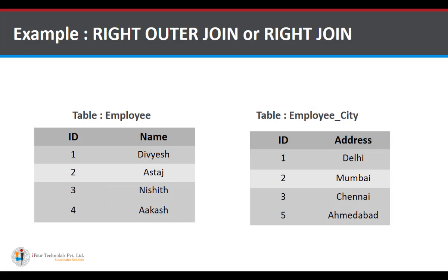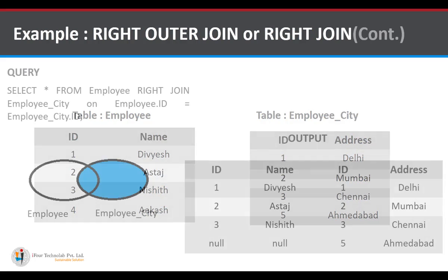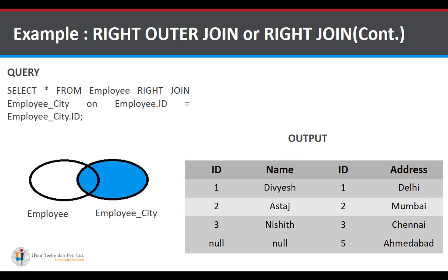The query for right outer join is: SELECT * FROM employee RIGHT JOIN employee_city ON employee.id = employee_city.id. This will show all the data from employee_city and the matched data from both the employee and employee_city tables, as shown in the Venn diagram and the output.